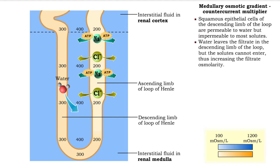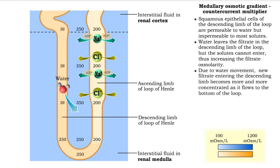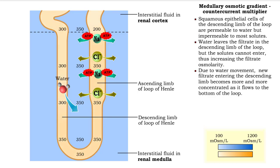Water leaves the filtrate in the descending limb of the loop, but the solutes cannot enter, thus increasing the filtrate osmolarity. Due to water movement, new filtrate entering the descending limb becomes more and more concentrated as it flows to the bottom of the loop.